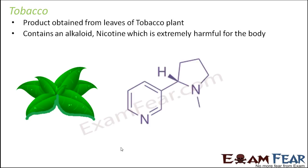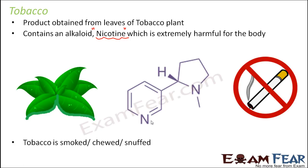Tobacco contains an alkaloid. Tobacco is present in cigarettes which people smoke, and it is also present in the form of tobacco powder which many people chew. It contains an alkaloid called nicotine which is extremely harmful for the body, and this is how the structure of nicotine looks like. Tobacco is smoked, chewed, or even snuffed - these are the various ways by which tobacco is taken inside the body.